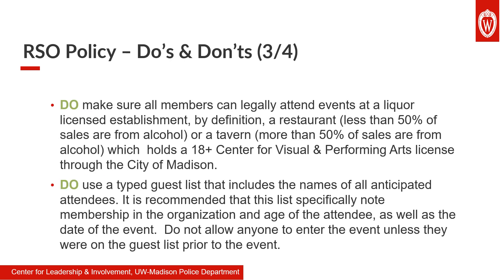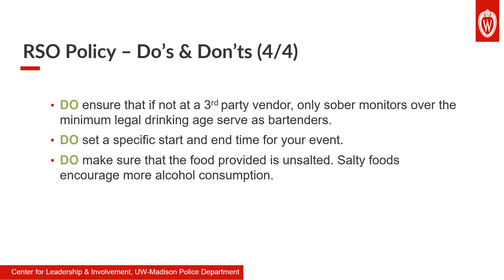Do make sure all members can legally attend events at a liquor-licensed establishment — by definition, a restaurant where less than 50% of sales are from alcohol, or a tavern where more than 50% of sales are from alcohol, which holds an 18-or-over Center for Visual and Performing Arts license through the City of Madison. Do use a typed guest list which includes the names of all anticipated attendees; it is recommended that this list specifically note membership in the organization and age of the attendee, as well as the date of the event. Do not allow anyone to enter the event unless they were on the guest list prior to the event. Do ensure that if not at a third-party vendor, only sober monitors over the minimum legal drinking age serve as bartenders. Do set a specific start and end time for your event. And do make sure that the food provided is unsalted — salty foods encourage more alcohol consumption.